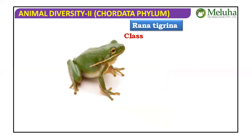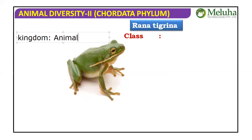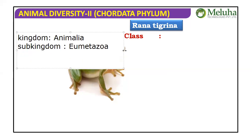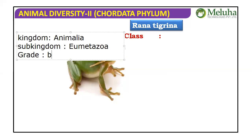The frog's classification starts from Kingdom Animalia, Sub Kingdom Eumetazoa. The Grade is Bilateria or Triploblastica.